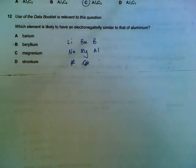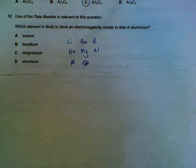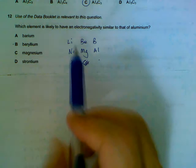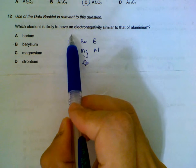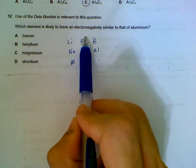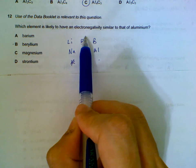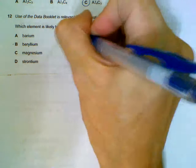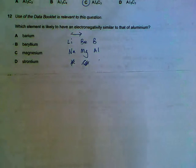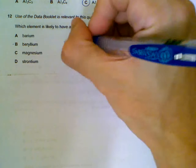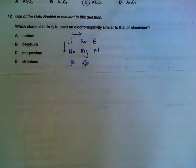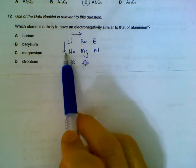Number 12, which element is likely to have an electronegativity similar to aluminium? Now, electronegativity basically means how easy is it for it to lose an electron? You have to remember that, along the period, as you go across the period, it's harder to lose an electron because of the increasing number of protons. So it gets harder as you go from left to right, but as you go down the group, it becomes easier to lose the electron because of the increasing number of shells. So harder as you go across, easier as you go down.